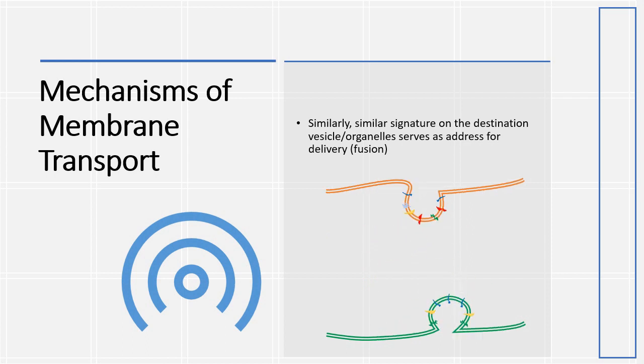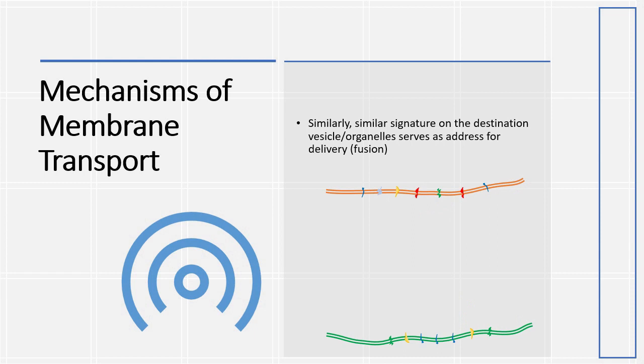Similar signature is needed on the destination vesicle or organelle which serves as address for delivery.